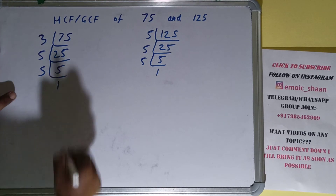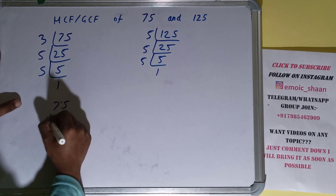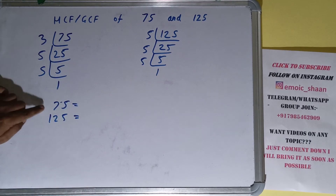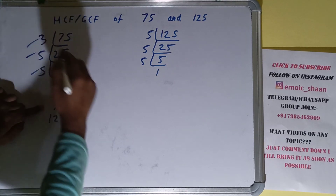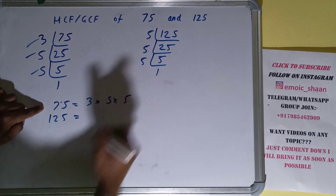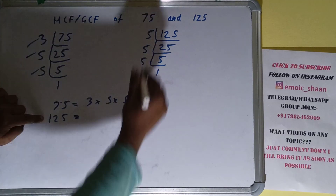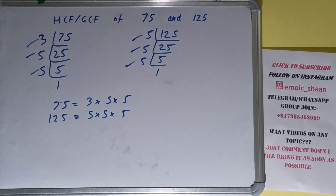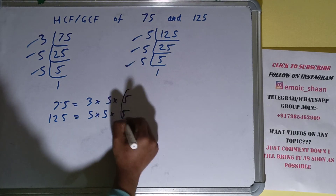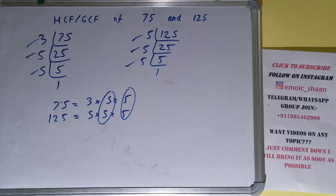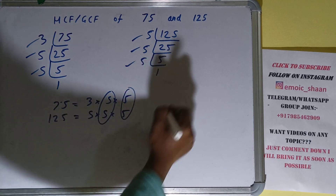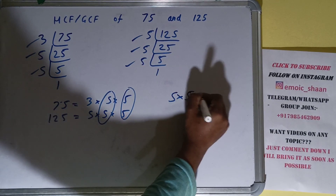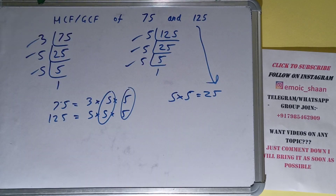The next thing we need to do is write down each of the numbers with their respective prime factors. For 75, the prime factors are 3, 5, and 5. For 125, the prime factors are 5, 5, and 5. The next thing we need to do is circle out the common prime factors. We have this 5 in common and this 5 in common. Do we have anything extra in common? No. So the answer will be 5 times 5, which is 25. The HCF or GCF of 75 and 125 is 25.